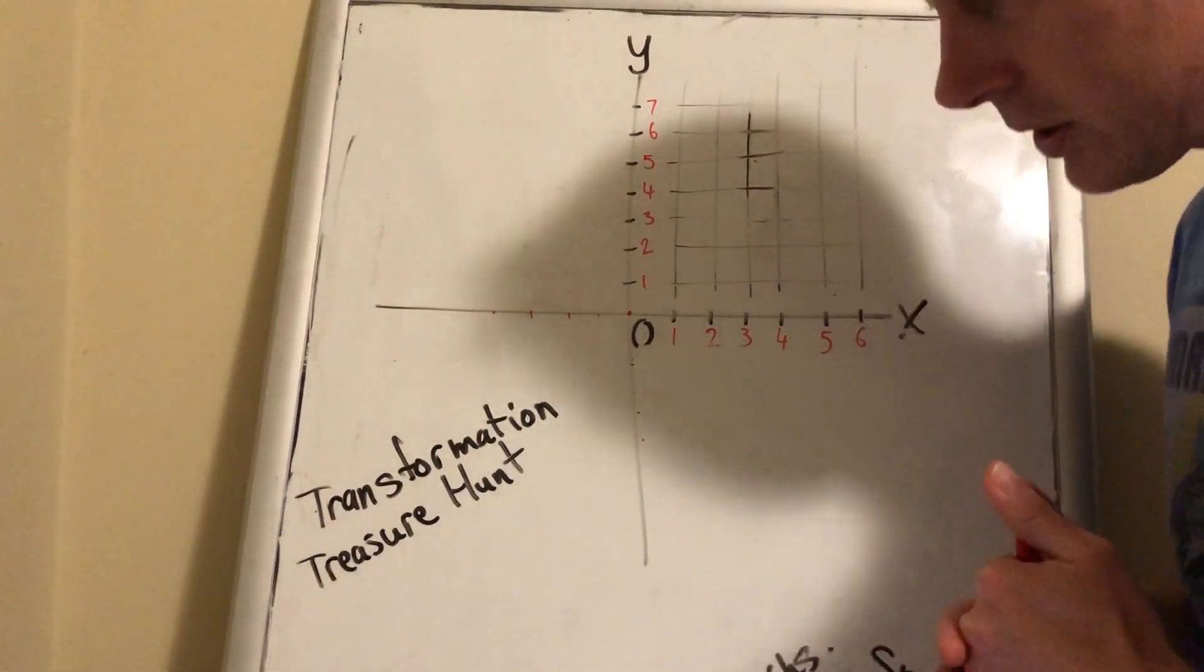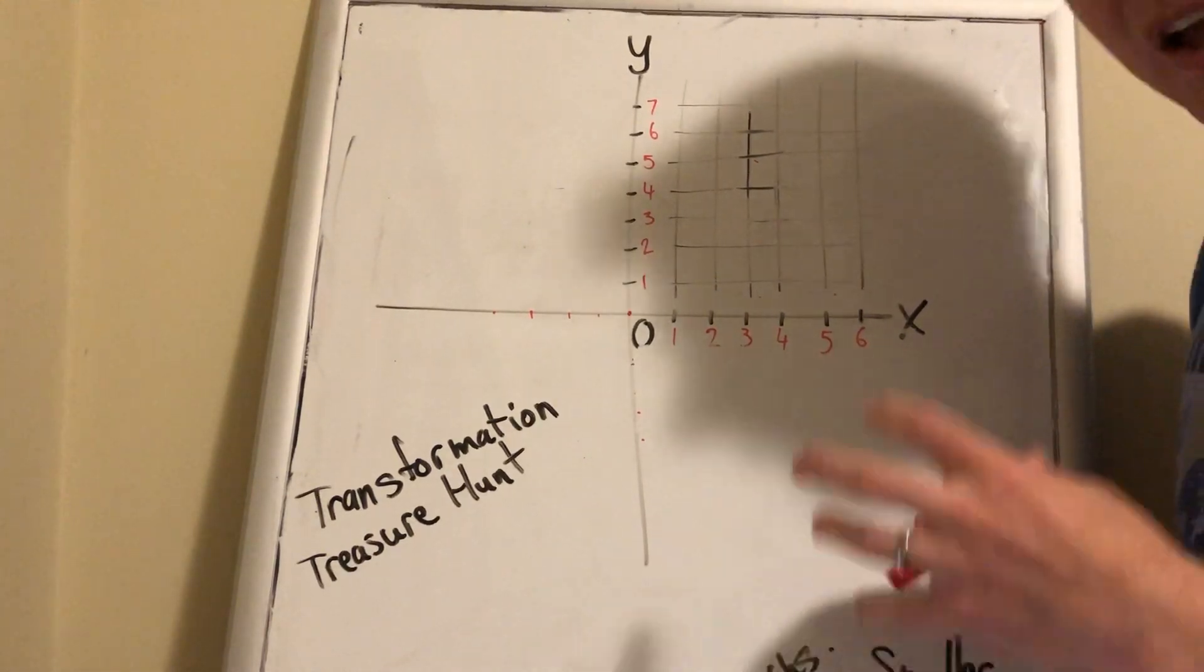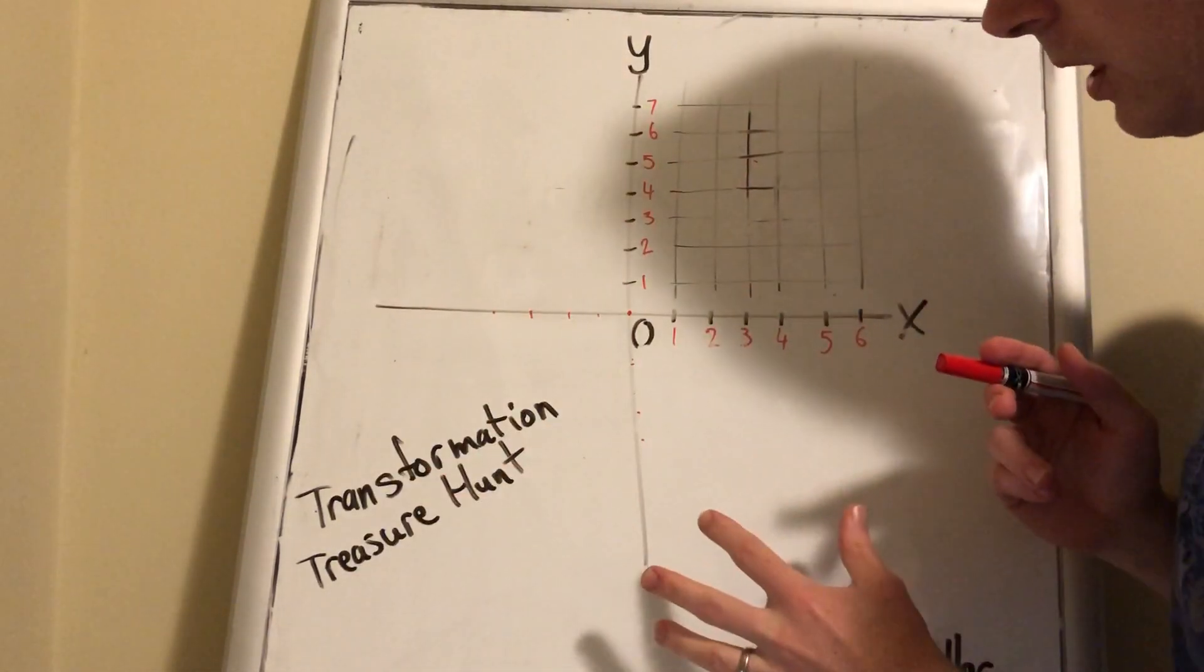Alright, five-six students. Our focus for Thursday and Friday of this week is location and transformation, and both activities center around the Cartesian plane.